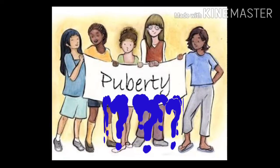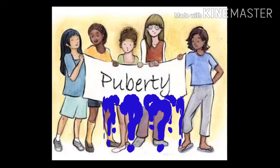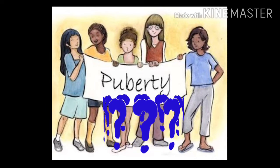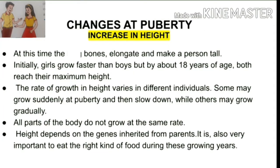There are certain changes at puberty, like increase in height. During puberty, there is a sudden increase in the height of both boys and girls — the bones elongate and make a person tall. Initially, girls grow faster than boys, but by about 18 years of age, both reach their maximum height. The rate of growth in height varies in different individuals.